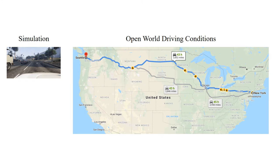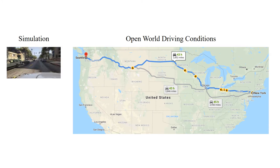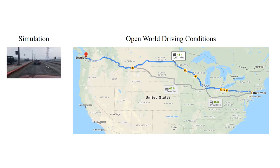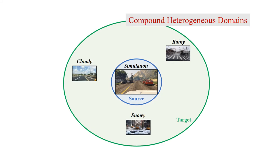Consider you are taking a self-driving car from New York to Seattle to attend CVPR. The simulation training system needs to adapt to new domains. Traditional domain adaptation mainly tackles pairwise adaptation with a distinct target domain, for example from simulation to rainy weather. However, in the real world, we are usually facing compound heterogeneous domains with mixed factors, like cloudy and snowy driving conditions.